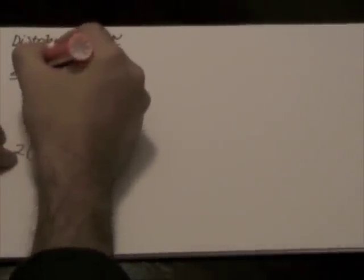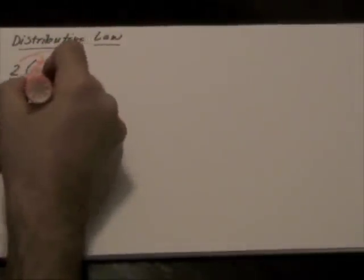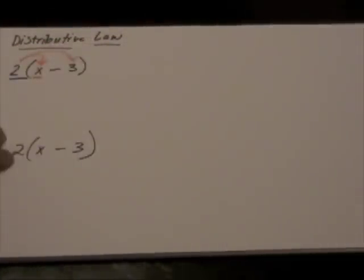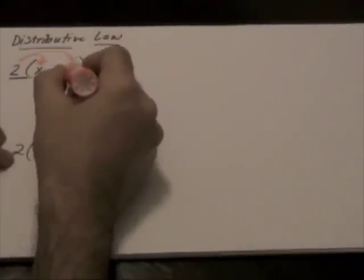So what happens is we are multiplying this 2 into the brackets with all the terms. The first term that we are going to multiply it with, here in this first example, is x.